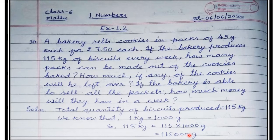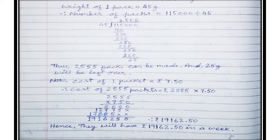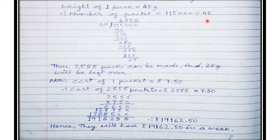That is 1 lakh 15,000 grams. So the total quantity is 1,15,000 grams. The weight of 1 bag is 45 grams. So the number of packs will be 1,15,000 divided by 45, because the total quantity of biscuits produced in a week is 1,15,000 grams and each packet contains 45 grams of biscuit. So the number of packets will be the division of 1,15,000 by 45. If you divide it, we get 2,555.